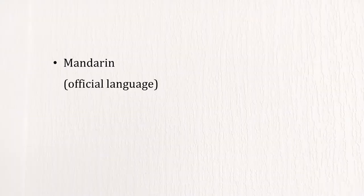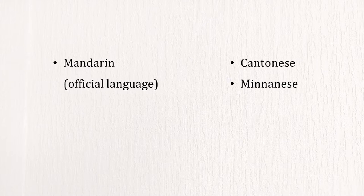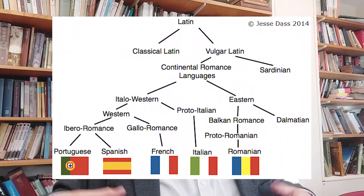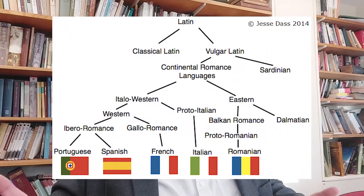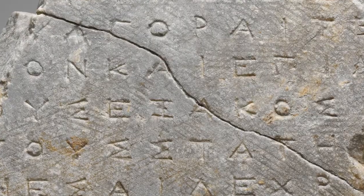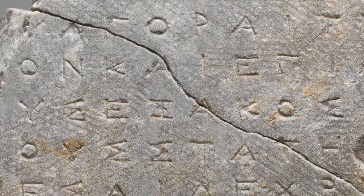What we call classical Chinese is in a sense the ancestor of modern forms of Chinese, including the official language known as Mandarin, but also the many dialects throughout China, such as Cantonese, Minnanese, Shanghainese, or Hakka. In a way, this is kind of similar to how Latin is considered the ancestor of modern Romance languages, including French, Italian, or Spanish, or how ancient Greek is the ancestor of modern Greek.